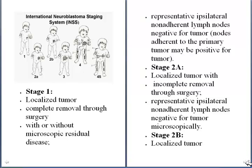Let us discuss the International Neuroblastoma Staging System. There are four stages of neuroblastoma: stage 1, stage 2, stage 3, and stage 4.